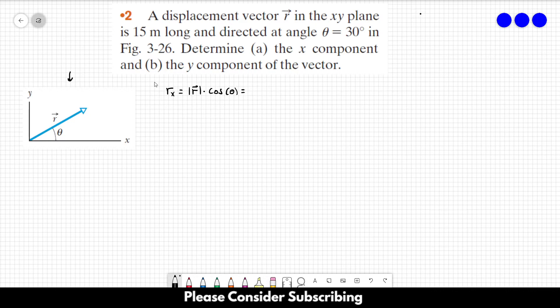So in letter A, it's just 15 times the cosine of 30 degrees, which is about 13 meters.